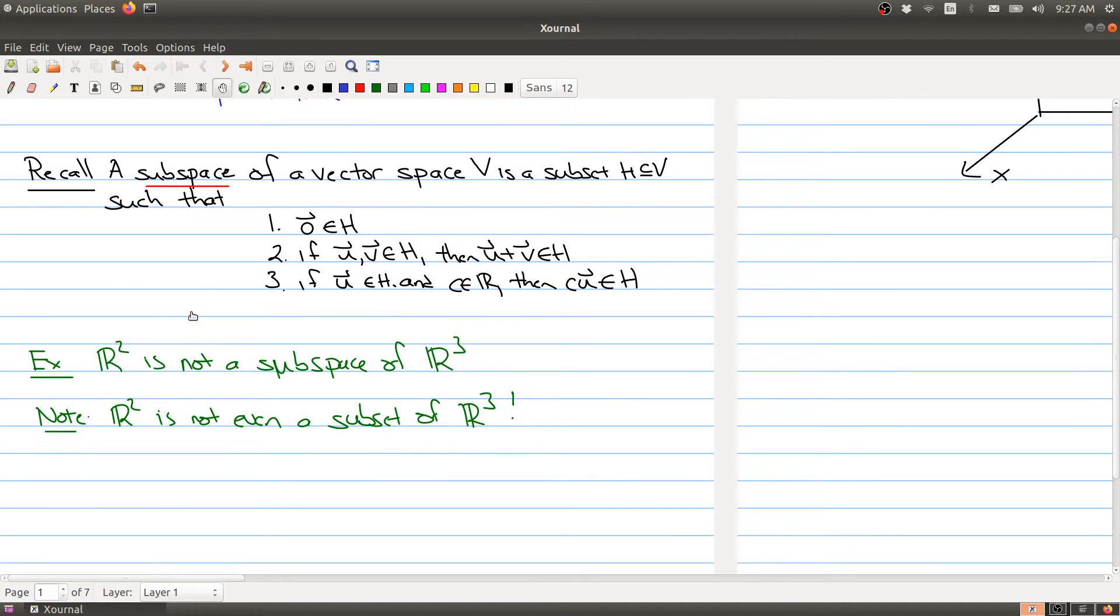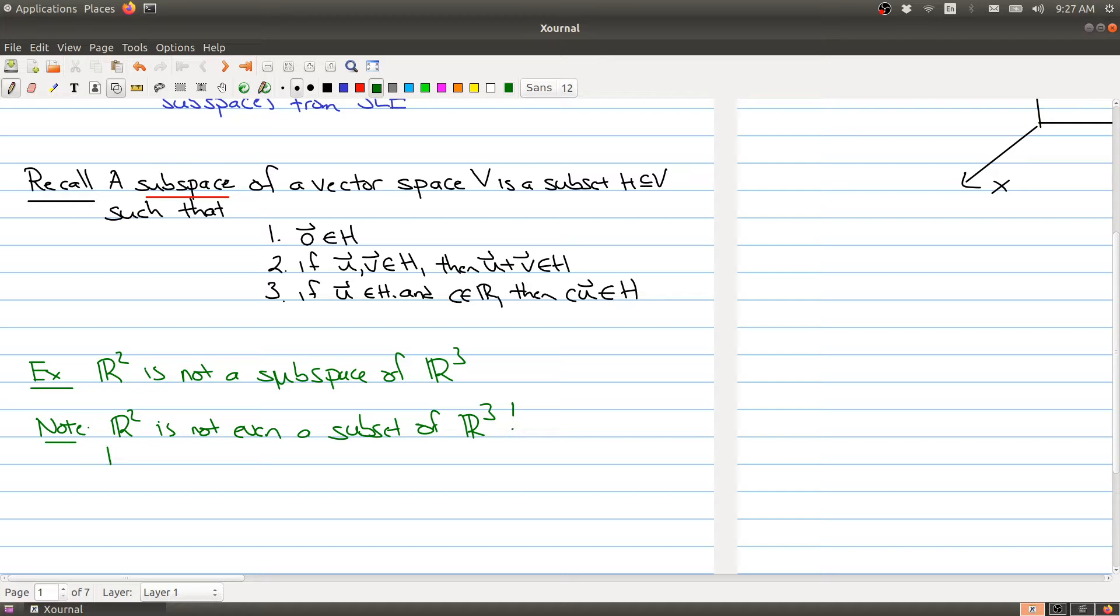And why is that? Well, that's because elements of R2 have the form [A,B] and elements of R3 have the form of a 3-tuple [A,B,C]. So we need it to have a subset. So when we're looking at subspaces of R3, we're looking at subsets of vectors that contain three elements. So this is not even an example of a subset, so it can't even be a subspace.